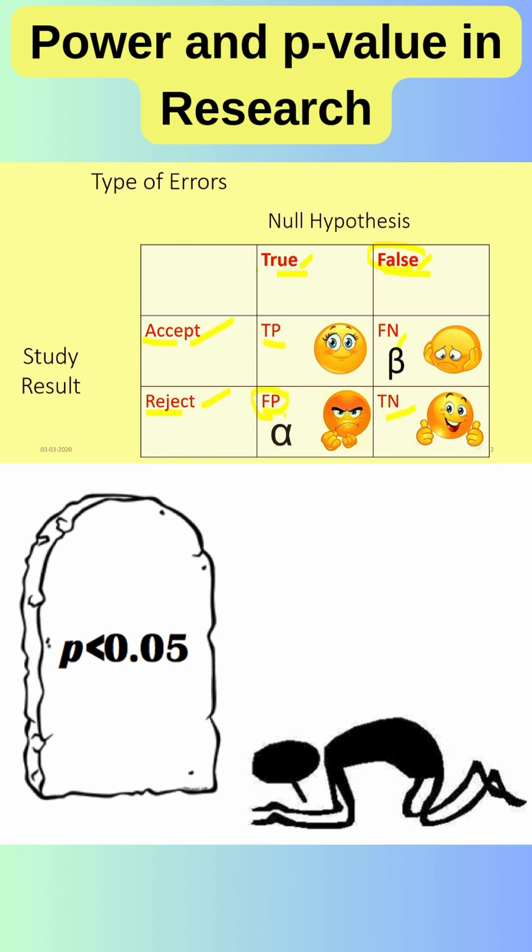Alpha error is rejecting null hypothesis when it is actually true. Beta error is accepting null hypothesis when it is actually false. The inverse of this beta error is called the power of the study. The probability of committing alpha error is called p-value.